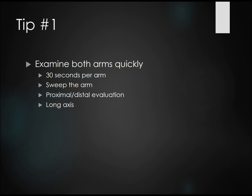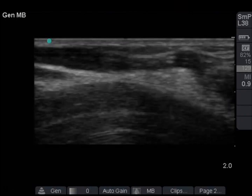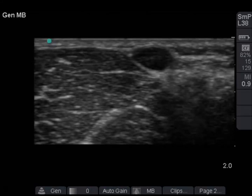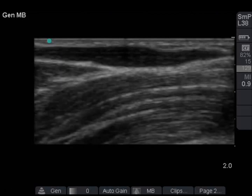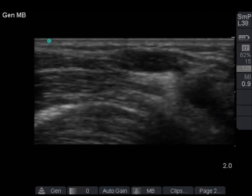Here are some tips to improve your success. Tip one: examine both arms to find the best vein. Spend no more than 30 seconds per arm, put a tourniquet on first, and quickly sweep up the arm looking for obvious veins. Once you find a suitable vein, slow down and do a more detailed proximal and distal evaluation. Make sure the vein doesn't dive too deep and there's no significant branching or valves. It can also be helpful to switch into a long axis view to assess the vein's trajectory. In this clip, you can see a vein with two branches that join together before becoming straight, with the probe then switched to long axis while the operator checks for compressibility.